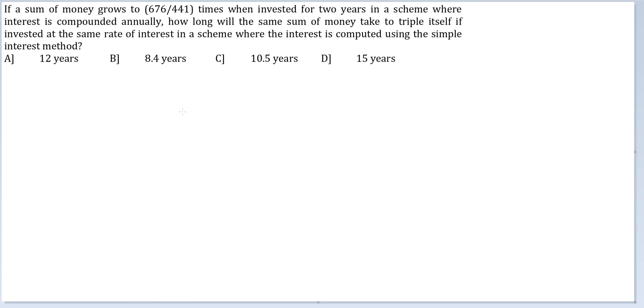Let's look at this. If your initial principle is P, 1 plus R by 100 and 1 plus R by 100 is equal to P into 676 by 441. The P is irrelevant. Can you see these portions? This is a perfect square on the left-hand side.